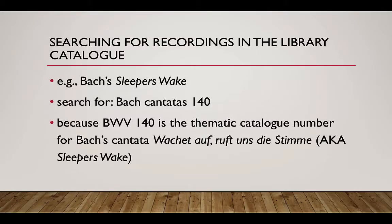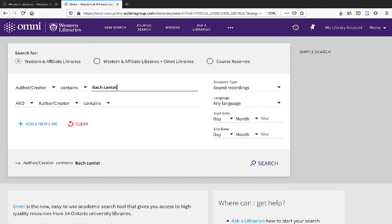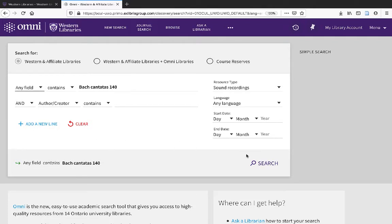Suppose we were after a recording of Bach's Sleepers Wake. We would search in the library catalogue for Bach Cantata 140. Why? Because BWV140 is the thematic catalogue number for this cantata by Bach. We'll need to change this dropdown from Author Creator to AnyField. Let's see what we find.